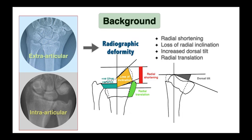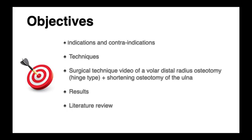On the contrary, younger patients with more demands might find it more disabling and might require surgical treatment to address the disability. The objectives of this educational program are to understand indications and contraindications of doing osteotomies in distal radius malunions, and to describe techniques to do osteotomy corrections in such settings. We will show a surgical technique video of a volar hinge type distal radius osteotomy plus shortening osteotomy of the ulna in an indicated patient, and also describe results of our technique in our series over a period of 5 years, as well as briefly review the available literature on the topic.